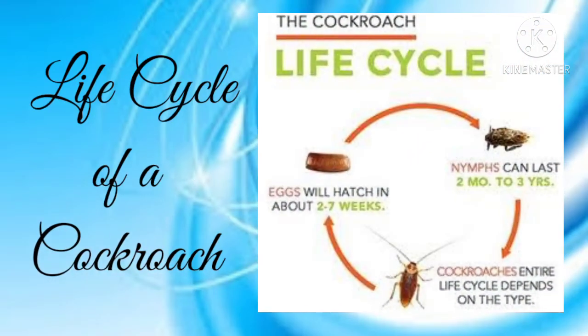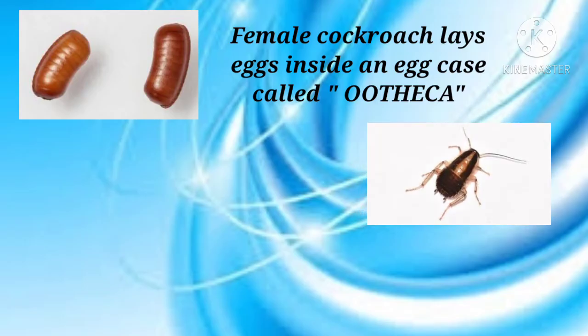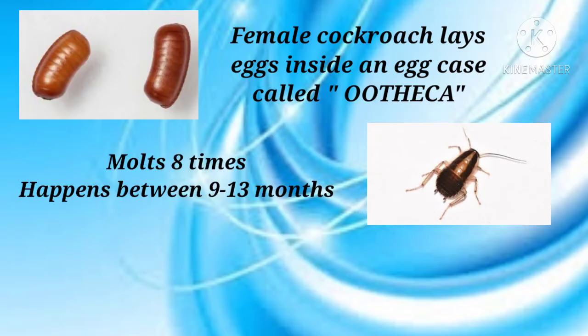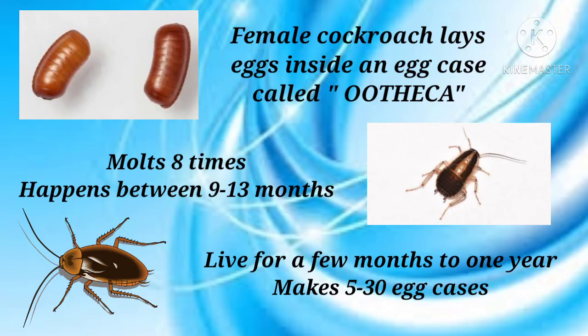The life cycle of a cockroach: a female cockroach lays eggs inside an egg case called ootheca. The egg hatches into a smaller, soft, white nymph without wings. It eats anything that an adult cockroach does. The nymph becomes a winged adult cockroach, and then it can live a few months to a year depending on the species.